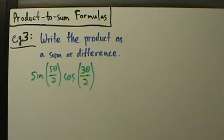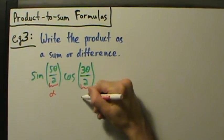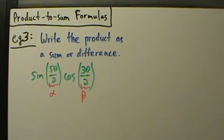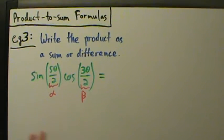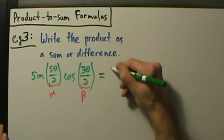So we use that formula with 5θ over 2 as our α and 3θ over 2 as our β. So with that formula, then just plug these values directly into the formula, and what we have is one-half open brackets.